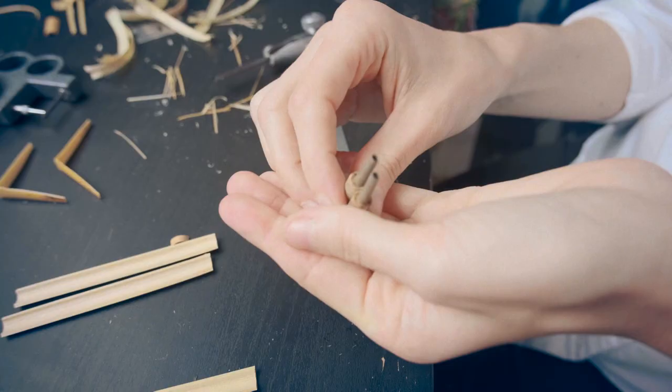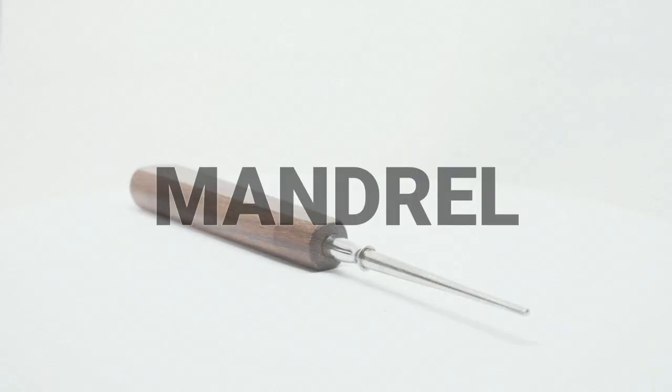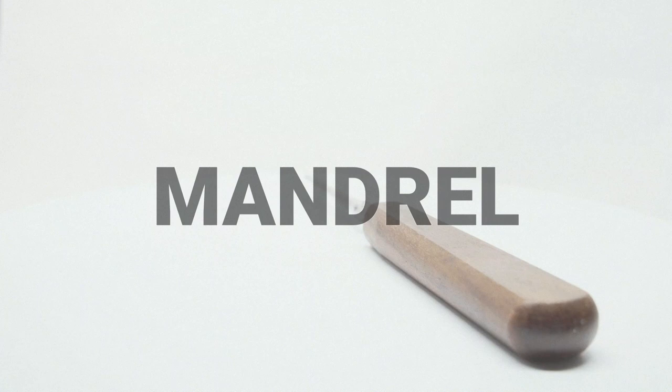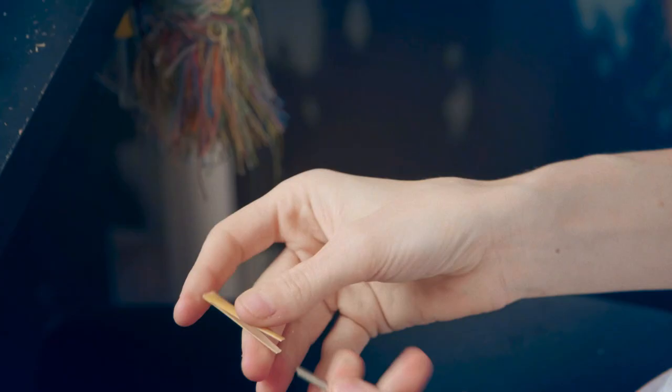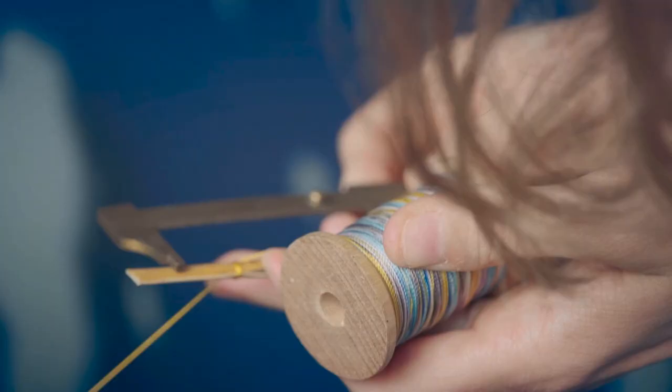These are staples, which we will attach the cane to. And this is called a mandrel. We put the staple on the mandrel. It's going to help us hold on to the reed while we tie it.